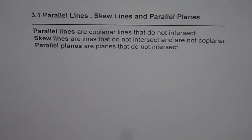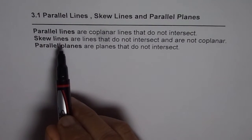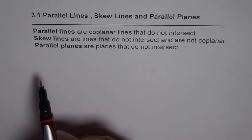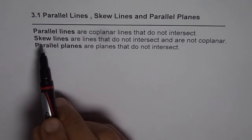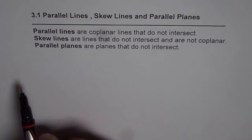Parallel lines are lines which do not intersect but they should be in one plane. Skew lines also do not intersect but they are in different planes. That is why skew lines do not intersect.